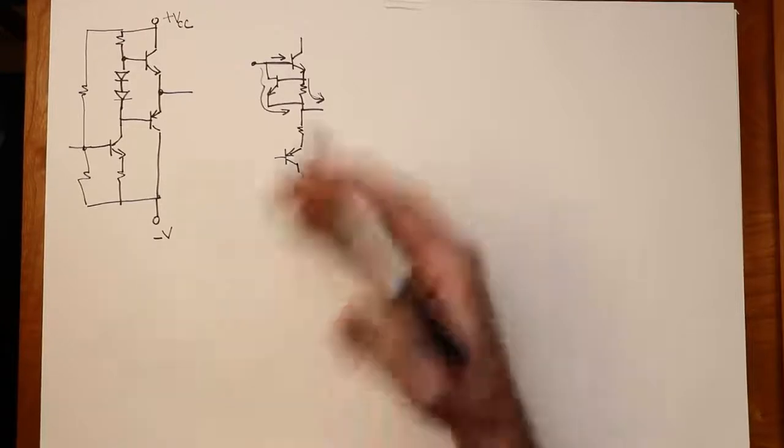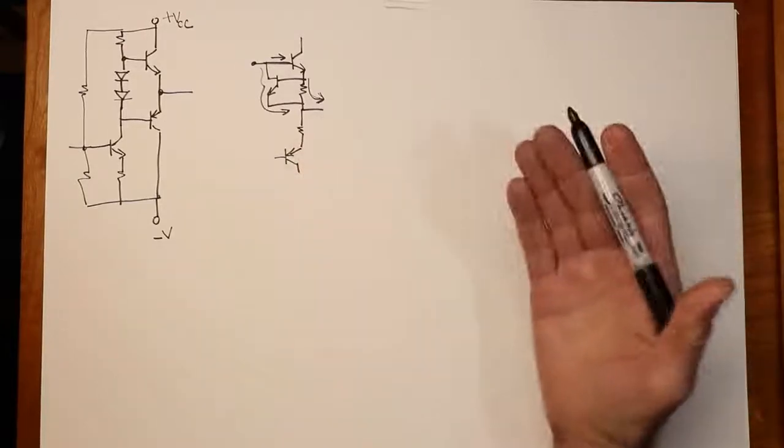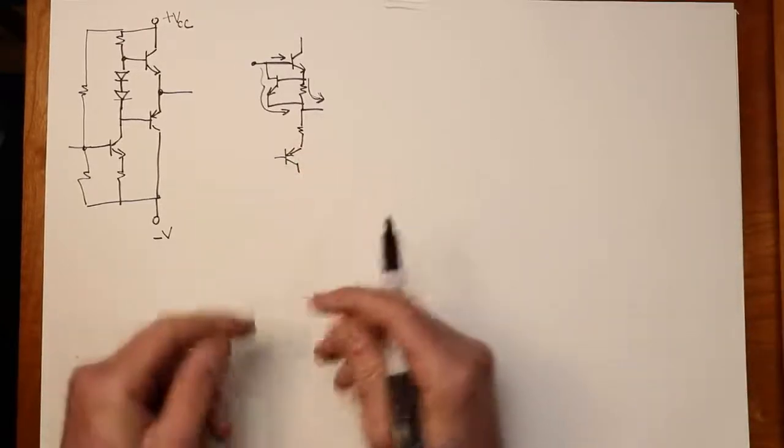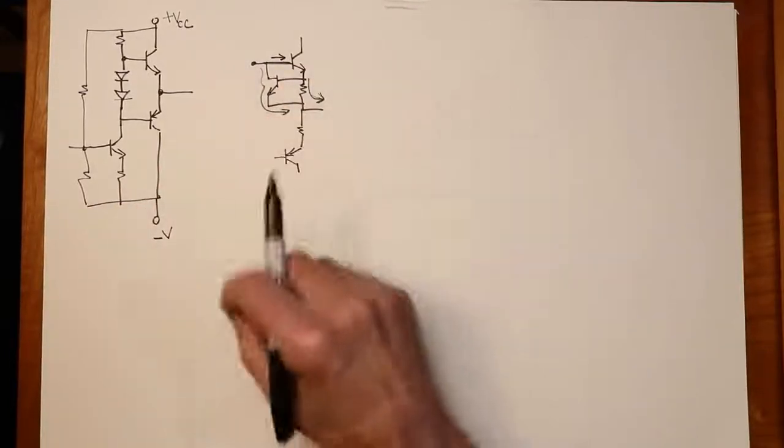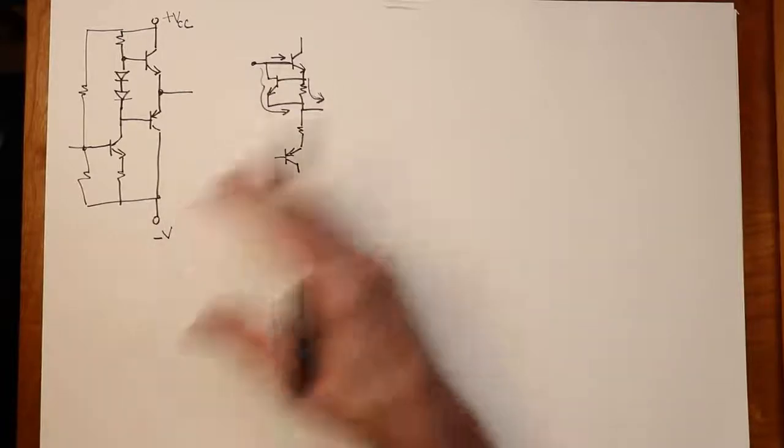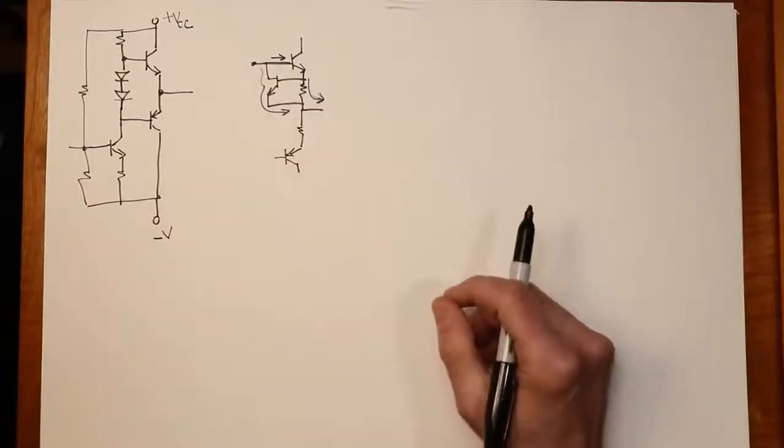And then when the fault goes away, for example, the consumer rewires it so there's no longer a short, nothing has to be reset. There's no circuit breaker, there's no fuse. It just works fine.